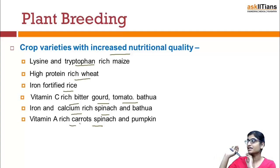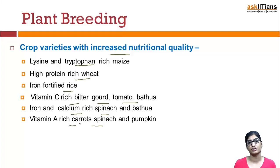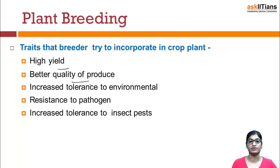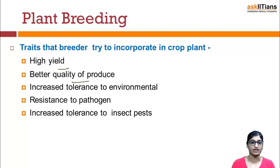These are the results that have been achieved through crop breeding — qualities that have been improved and that we are using today. A plant breeder would want to incorporate traits like high yield and better quality of produce. There is also increased tolerance to environmental conditions, resistance to pathogens and infectious agents, and increased tolerance to insect pests. These are the core needs of plant breeding.